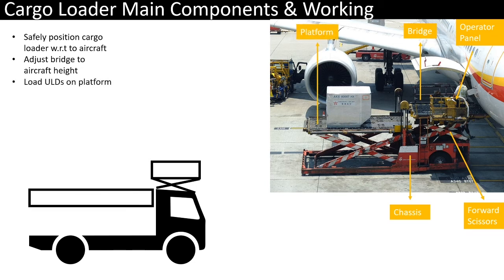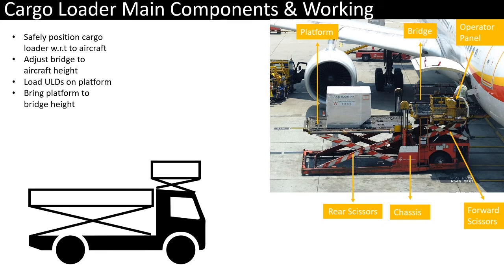The platform is where the ground crew loads all the ULDs, and this platform is mounted over a rear scissor lift mechanism that can raise or lower itself independent of the bridge height. After ground crew loads ULDs over the platform, the operator raises the platform to the same height as the bridge, which is at the same height as the aircraft door, aligning all three levels. The operator then activates the rolling mechanism that automatically moves the ULDs from the platform over to the bridge and into the aircraft.